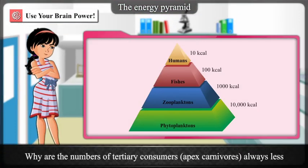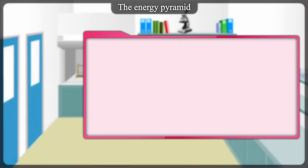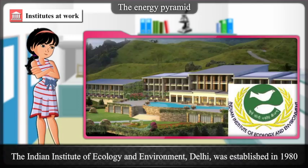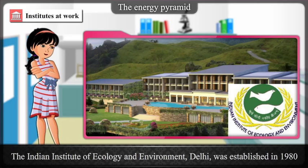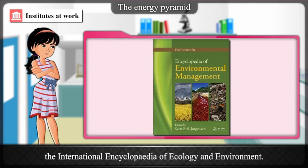Why are the numbers of tertiary consumers, i.e. apex carnivores, always less than those of other consumers? The Indian Institute of Ecology and Environment, Delhi, was established in 1980 and is involved mainly in research, training and arranging workshops and seminars. This institute has published the International Encyclopedia of Ecology and Environment.